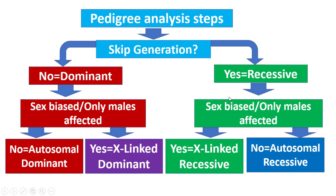Before the main discussion, I want to show a brief overview of how to decide whether a pedigree tree is autosomal or X-linked, and either dominant or recessive. This is a general rule — not applicable in all circumstances, but in most cases it will apply. First, look for any generation skip: if there is a skip of generation, it must be recessive. If there is no skip and all generations are affected, it must be dominant. If it is sex-biased — a particular sex is affected — it will be X-linked.